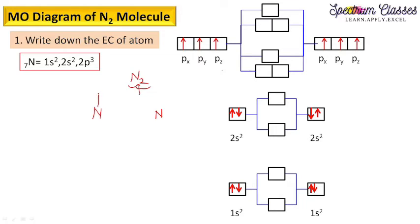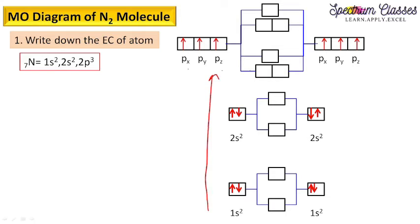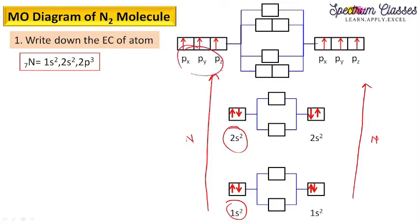On one side you draw the electronic configuration in increasing order of energy, and on the right-hand side you draw the electronic configuration in increasing order for the other nitrogen atom. So here we have 1s², 2s², and 2p³ for one nitrogen, and 1s², 2s², 2p³ for the second nitrogen, written in increasing order of energy.